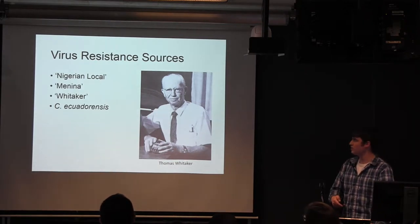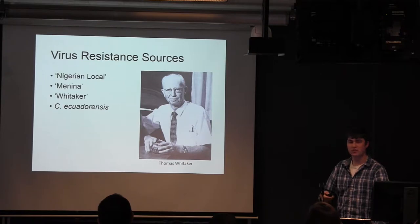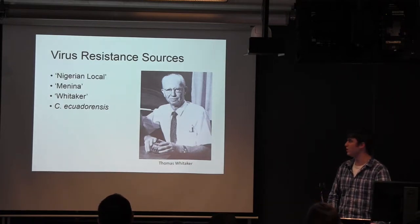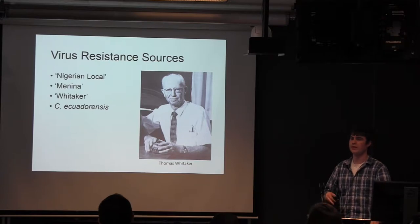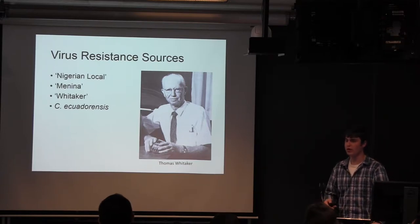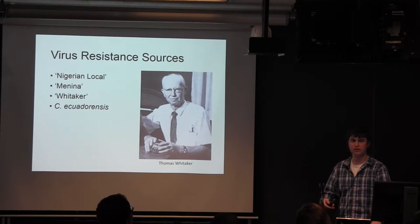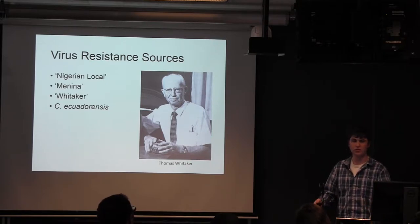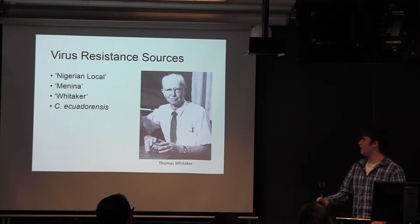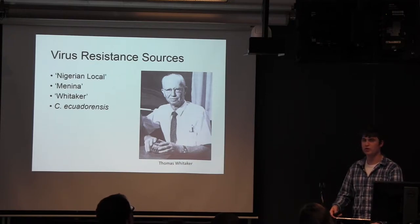For virus resistance, the most common source of resistance for those four viruses is coming from Nigerian local and Menina. These are two old varieties of cucurbita moschata. Cucurbita moschata is like a butternut squash, tropical pumpkin, that type of thing. And they can cross pretty well with cucurbita pepo.